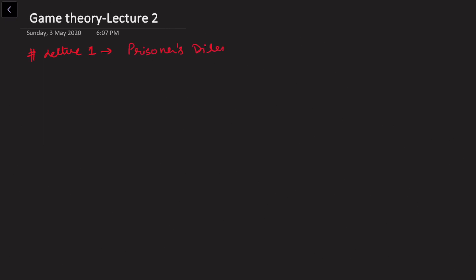Hello everyone, this is game theory lecture number 2. In lecture number 1, we discussed the prisoner's dilemma example given by Nash, talked about the equilibrium state in game theory, and got a little idea about what game theory is. For reference, you can go back to the previous video, have a look, and then we will start with this video.